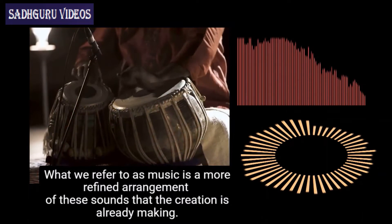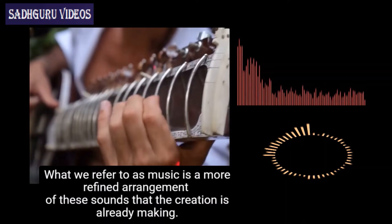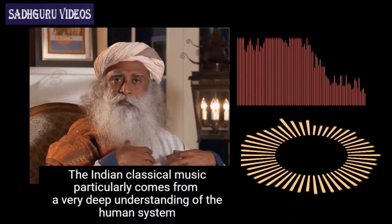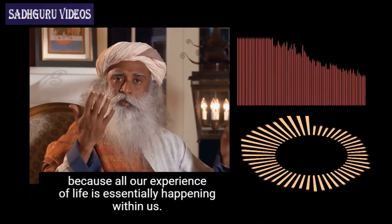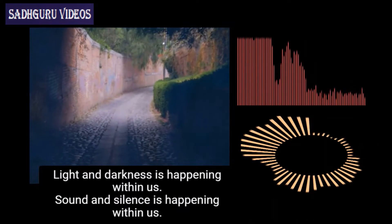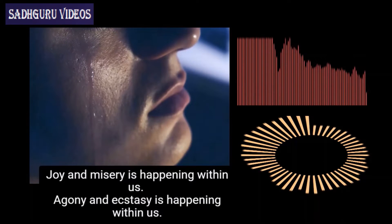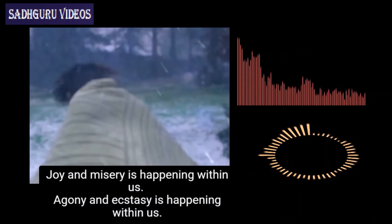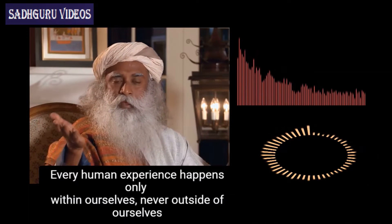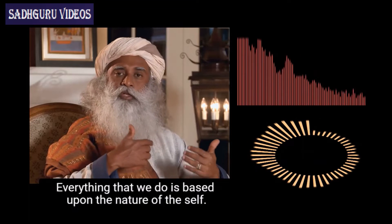What we refer to as music is a more refined arrangement of the sounds that creation is already making. The Indian classical music particularly comes from a very deep understanding of the human system, because all our experience of life is essentially happening within us. Light and darkness is happening within us, sound and silence is happening within us, joy and misery is happening within us, agony and ecstasy is happening within us. Every human experience happens only within ourselves, never outside. Because we are the basis of our experience, everything that we do is based upon the nature of the self.